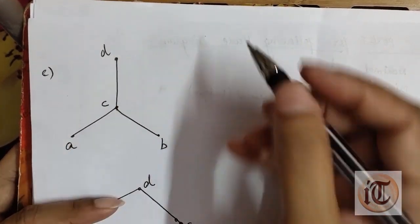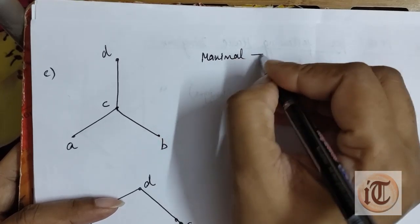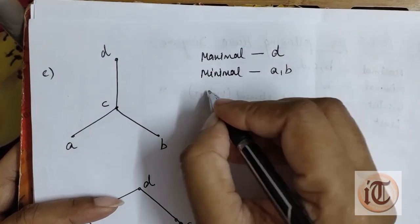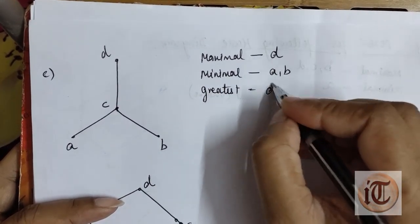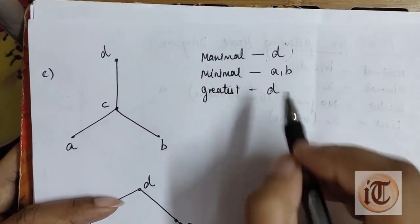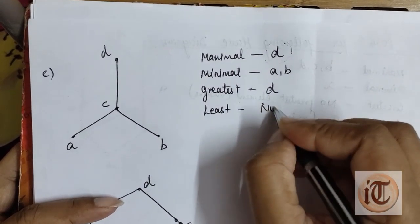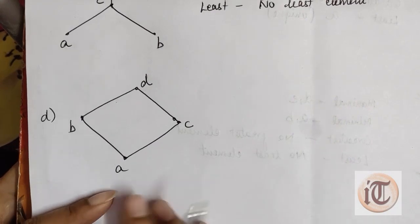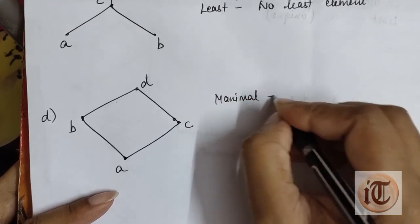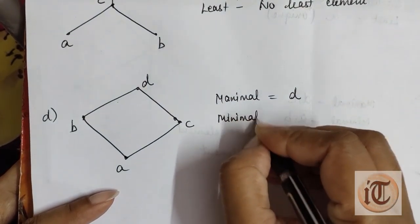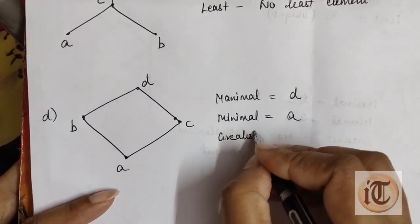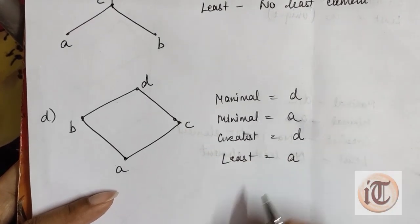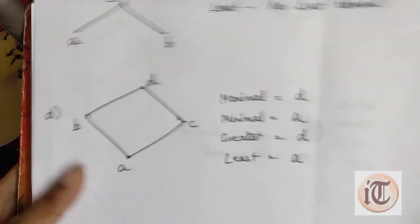Another example: for this Hasse diagram, the maximum element is the top element d, and the minimal element is the bottom elements a and b. The greatest element is d, because d is the only unique maximal element. There is no least element because we have more than one element in the minimal case. In the next example, the maximum element is d, minimum is a, greatest element is d as it is a unique maximal element, and least element is a because a is the unique minimal element.